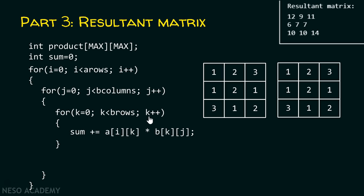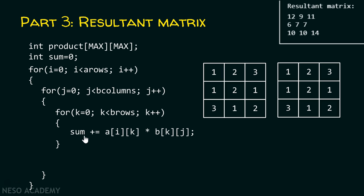Then we increment k to one, come back inside the for loop, and now we are at the zeroth row and first column of matrix A — taking that element. Since k=1 and j=0, we access the corresponding element from matrix B. The next values multiplied are two and one, giving two. Two gets added to the sum, which previously contained one, so two plus one equals three, stored in sum.